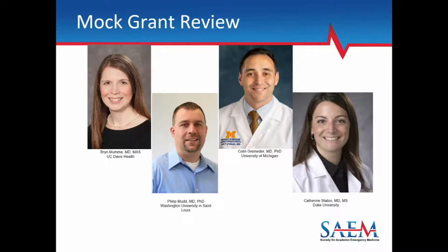Each reviewer will give their numeric overall impact score. The primary reviewer will provide their comments, then the secondary and tertiary reviewers will follow. As a rough time frame, let's have the primary reviewer spend about 10 minutes, and five minutes or less for each of the other two — keeping it to about 20 minutes, ideally 10 to 15 — after which we can open it up for more general discussion. Secondary and tertiary reviewers, please don't feel the need to repeat comments already raised.